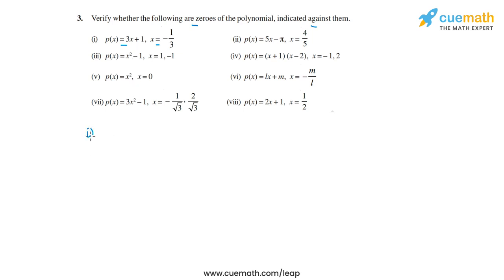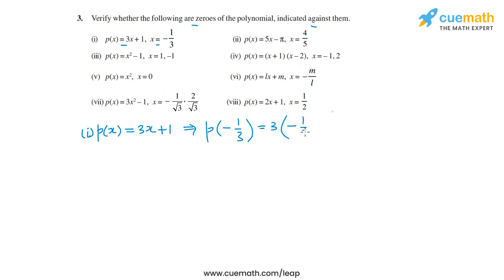p(x) = 3x + 1, which means p(-1/3) = 3 × (-1/3) + 1. Substituting -1/3 into 3x + 1: 3 × (-1/3) = -1, so -1 + 1 = 0. Therefore, x = -1/3 is a zero of p(x).